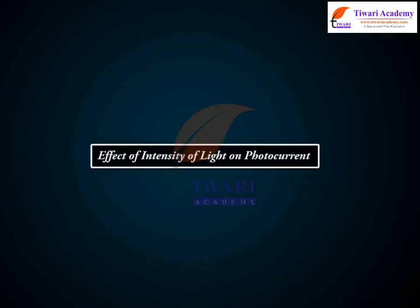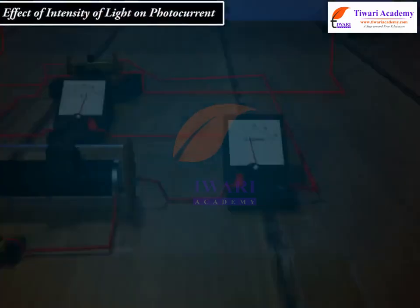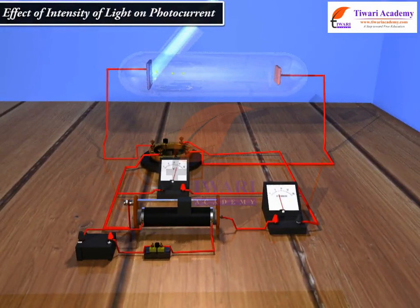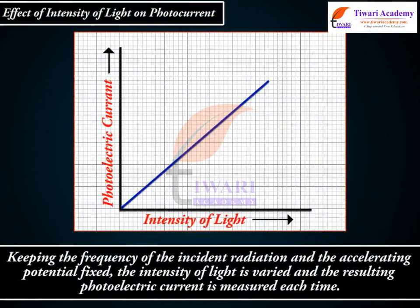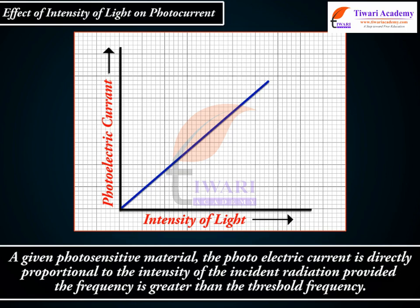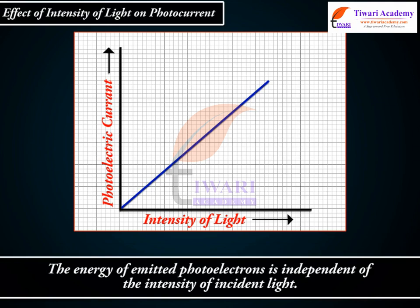Effect of intensity of light on photocurrent. The collector plate A is kept at a positive potential with respect to emitter C. Keeping the frequency of the incident radiation and the accelerating potential fixed, the intensity of light is varied and the resulting photoelectric current is measured each time. For a given photosensitive material, the photoelectric current is directly proportional to the intensity of the incident radiation, provided the frequency is greater than the threshold frequency. The energy of emitted photoelectrons is independent of the intensity of incident light.